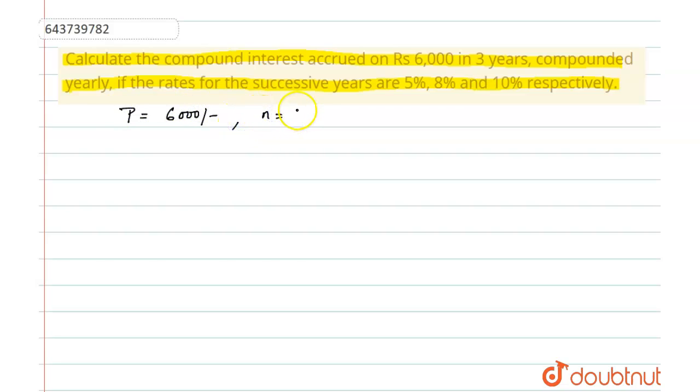Time period is given as 3 years, and the successive rate of interest are given as 5% as r1, r2 as 8%, and r3 as 10% respectively.